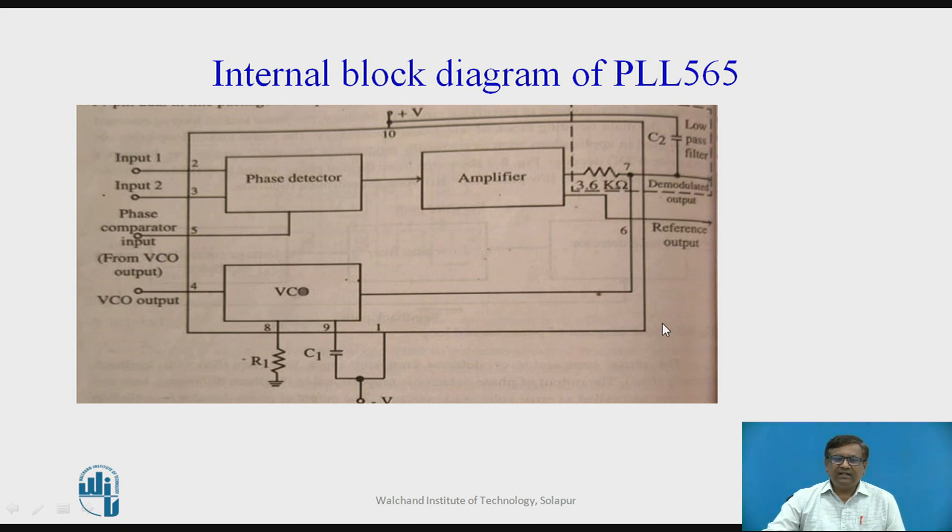If you look at the internal block diagram of IC 565, as we discussed earlier, phase detector is the major component. The output of this phase filter is given to the amplifier which is present inside this IC 565. The output of this amplifier is given to the low pass filter comprised of capacitor C2 and an internal 3.6 kilo ohm resistor.